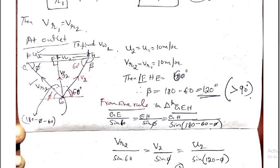Beta can be calculated as 180 minus 60, and beta which is now more than 90 degree. Vr2 always acts on the left side. The relative velocity after striking — the water which is going out — that velocity, meaning the relative velocity, goes out at the angle equal to the vane angle at outlet, which is phi. The angle between GE and EH, the total angle at junction E, is 180 degree. So this angle is 180 minus 60 minus phi. That gives 120 minus phi.